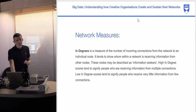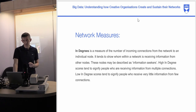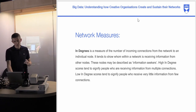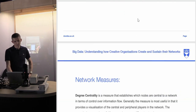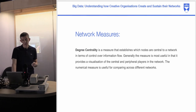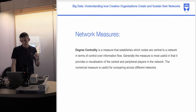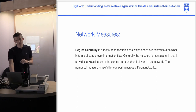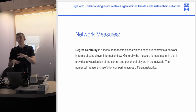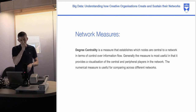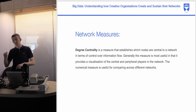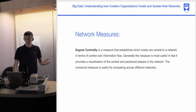In-degree shows who within a network is receiving information — these nodes may be described as information seekers. High in-degree scores signify people receiving information from multiple connections; low in-degree scores signify those receiving very little. Degree centrality is another measure establishing which nodes are central in terms of control over information flows — it provides visualization of central and peripheral players. We also looked at clique participation index, which was quite revealing in terms of how the different arts organizations were structured.